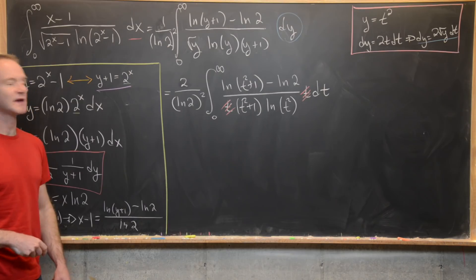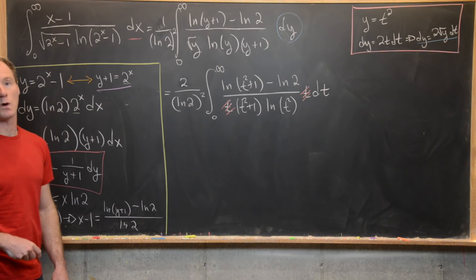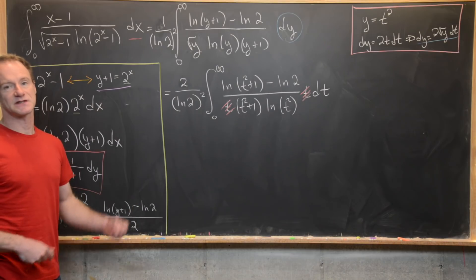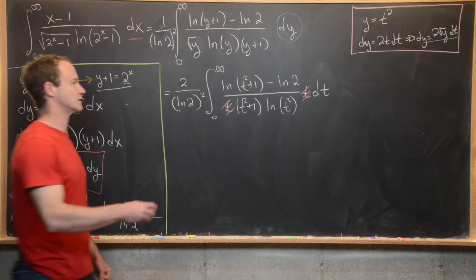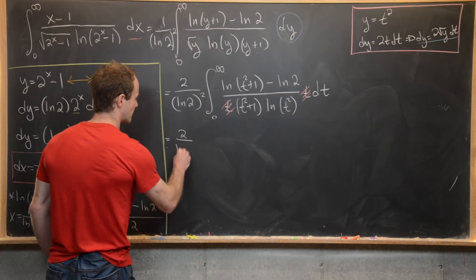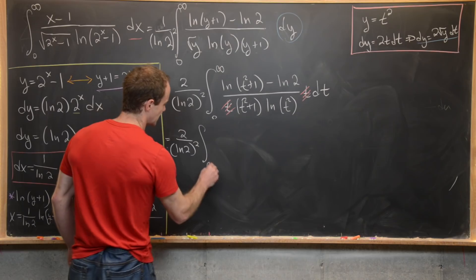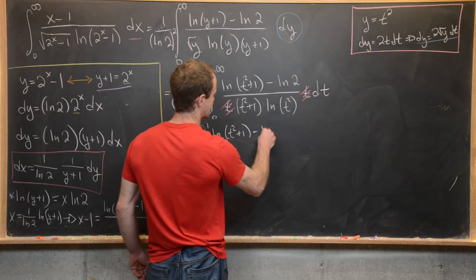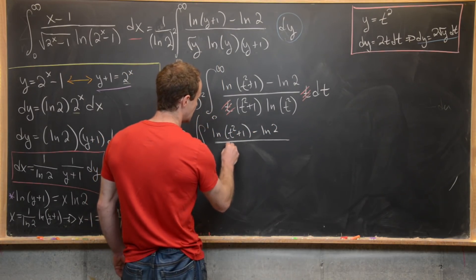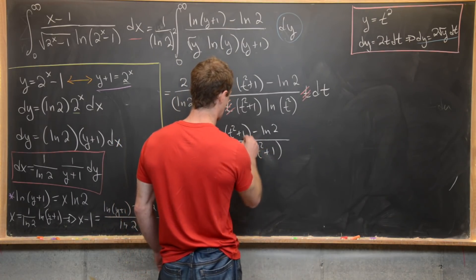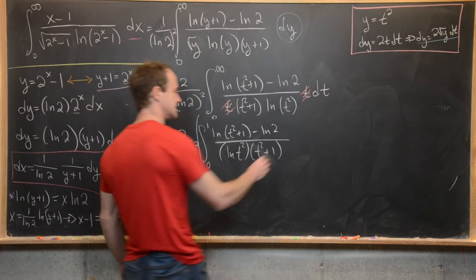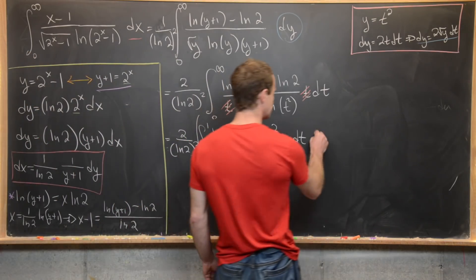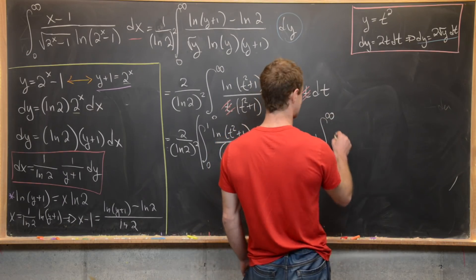Notice that something goes wrong when t equals one: we get ln(1) which is zero in the denominator, so we split this into two integrals. We have 2 over ln(2) squared times the integral from 0 to 1 plus the integral from 1 to infinity, both of [ln(t²+1) minus ln(2)] over [ln(t²) times (t²+1)] dt.